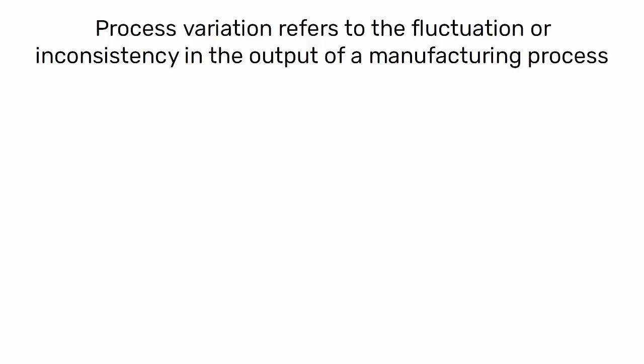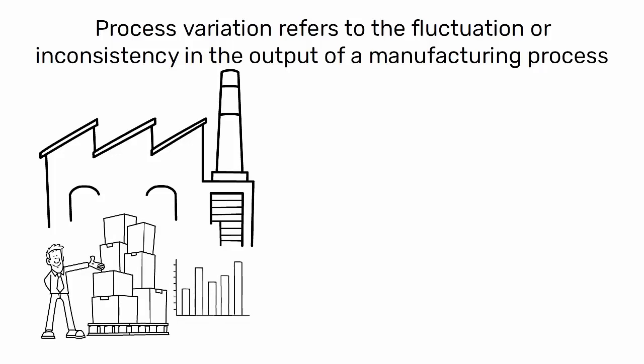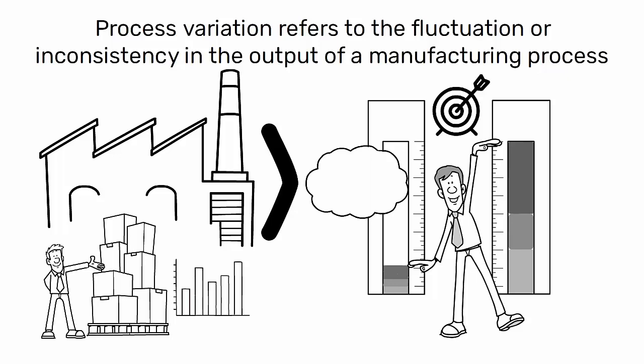Process variation refers to the fluctuation or inconsistency in the output of a manufacturing process. It's a natural occurrence in any process, but in the context of industrial engineering and lean manufacturing, the goal is to minimize this variation as much as possible to improve efficiency, quality, and predictability.